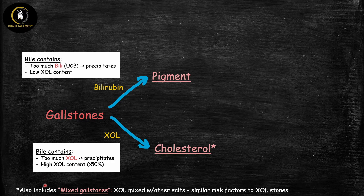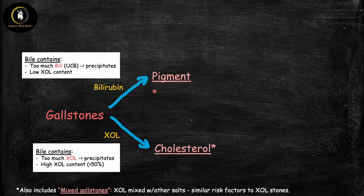For completion, most gallstones are actually mixed — cholesterol combined with other salts. Because these mixed gallstones have very similar risk factors to pure cholesterol stones, we bucket them under cholesterol. So we can divide gallstones into two categories: cholesterol stones made up of cholesterol, and pigment stones made up of bilirubin.